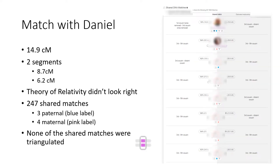I found an example of this in the match list I was using and found a match with Daniel. I was going through all of the MyHeritage Theory of Family Relativity estimates — you can sort your match list to see only matches that have a relativity theory — and I was labeling the ones that looked accurate with a maternal or paternal color. I came across a 14.9 centimorgan match made up of two segments: one was 8.7 and the other was 6.2 centimorgans.